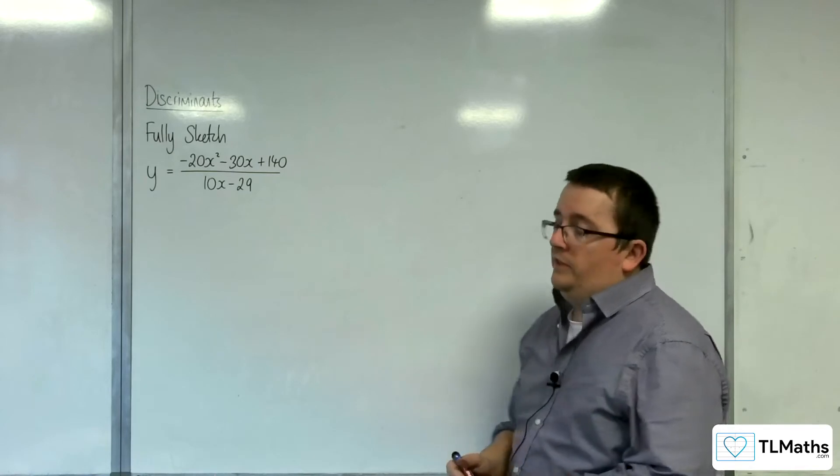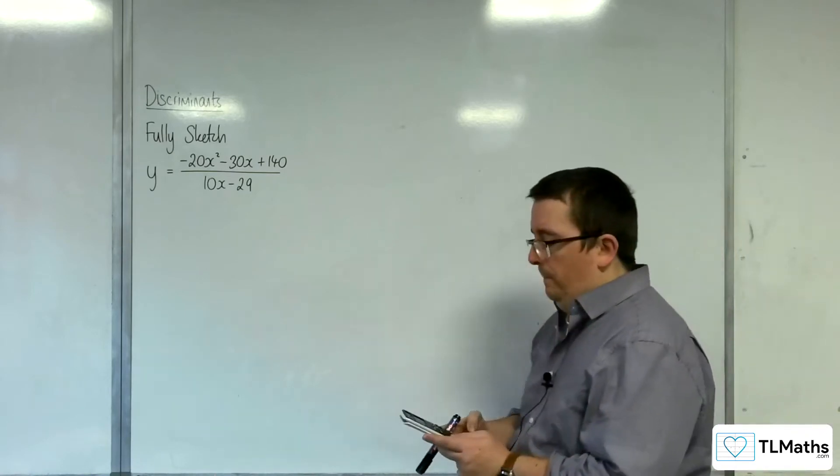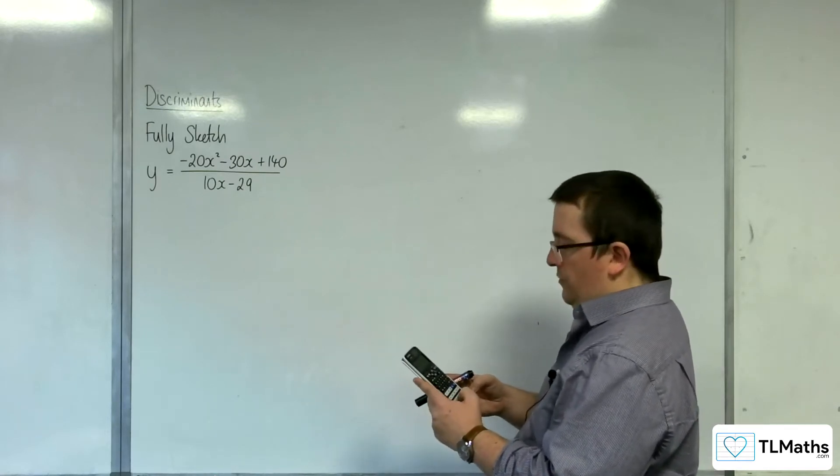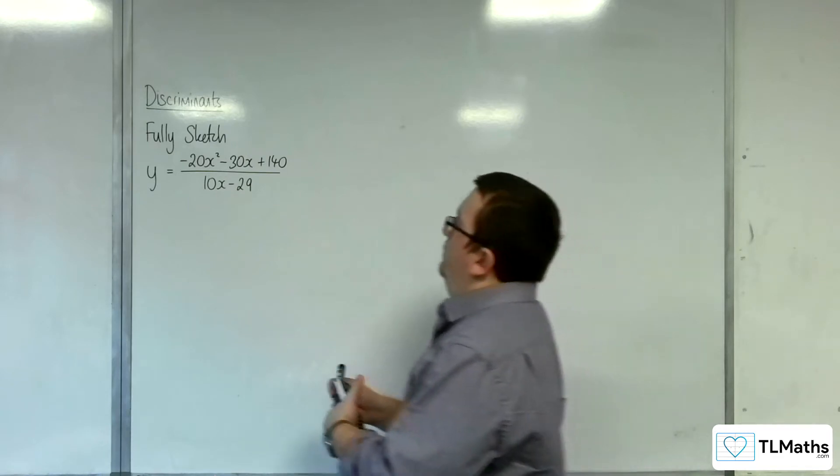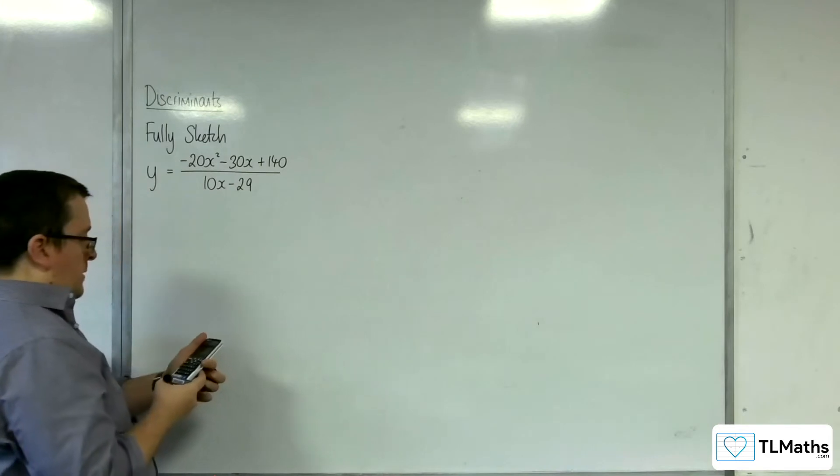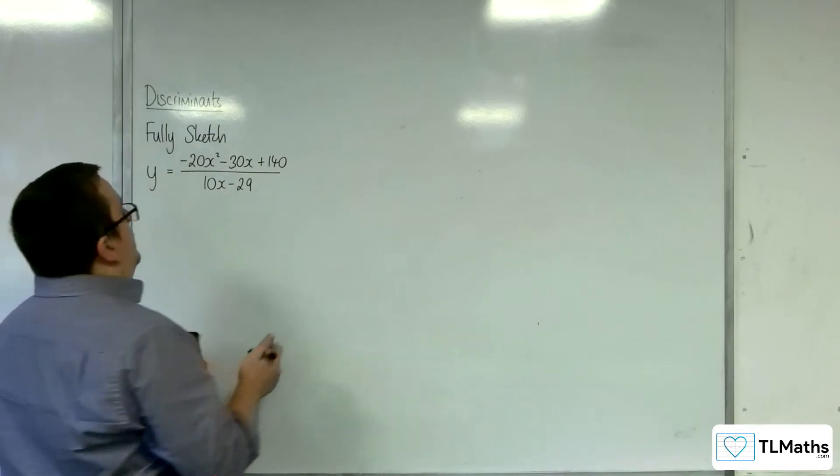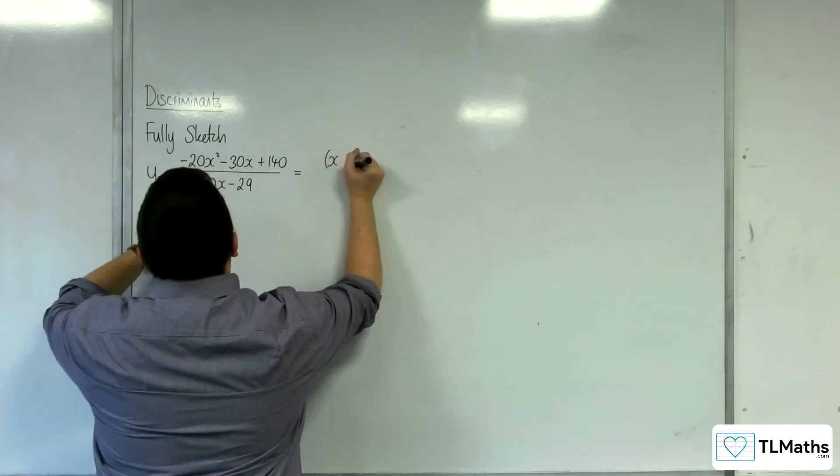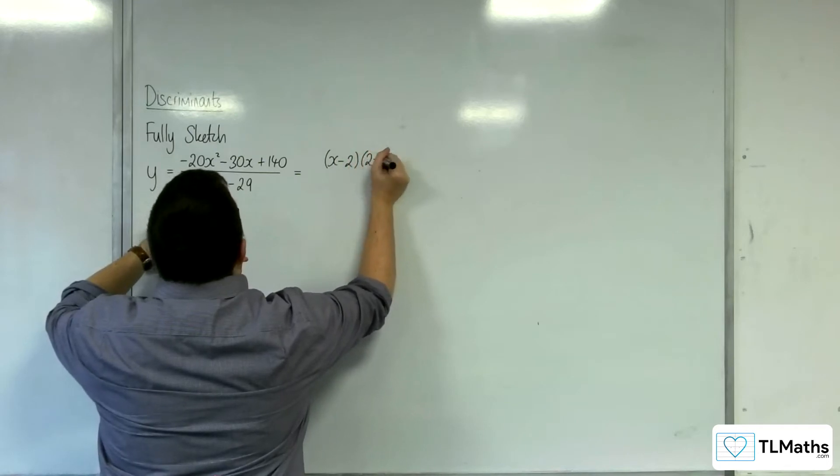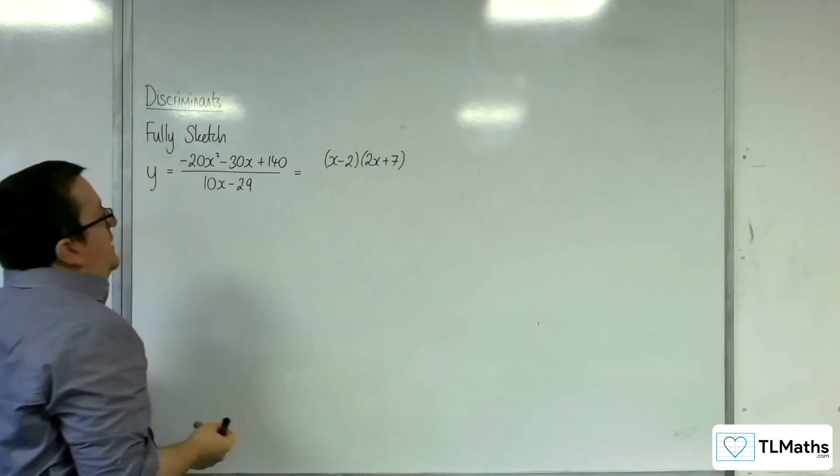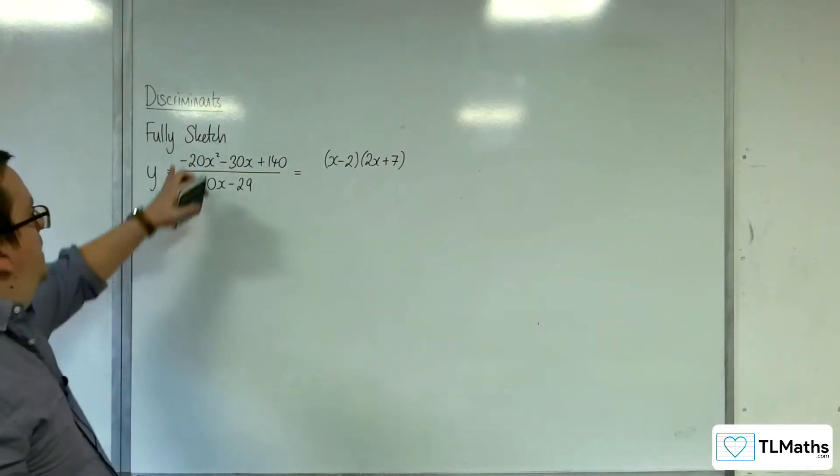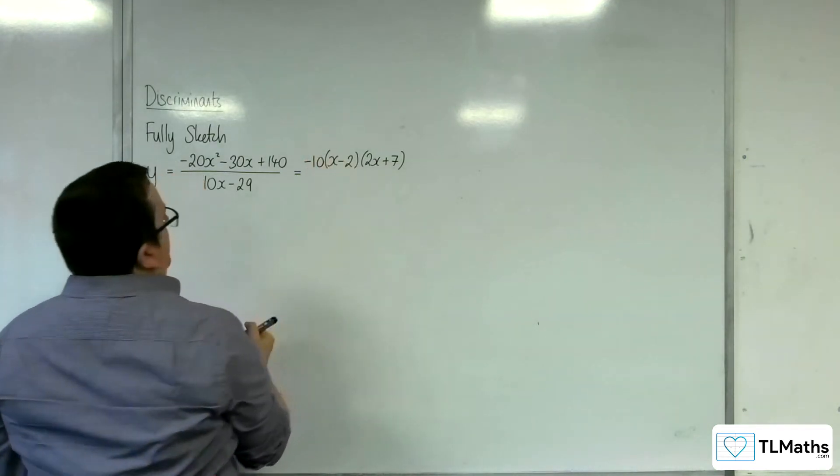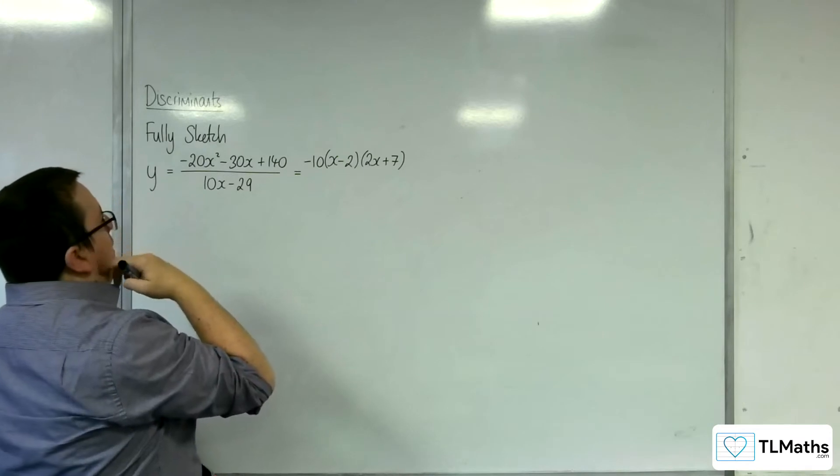First thing to do, factorize that numerator. So, minus 20, minus 30, and 140. We've got 2 and minus 7 halves. So we've just got to be a little bit careful here. x take away 2, and 2x plus 7. Now, obviously, that will not expand to make that numerator. That will expand to get me 2x squared, so I need to multiply this through by minus 10.